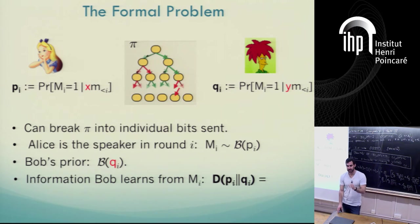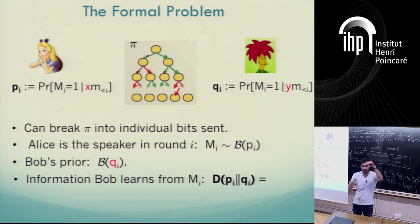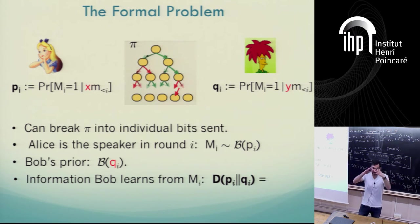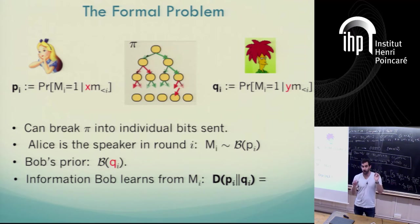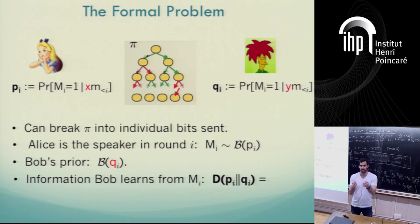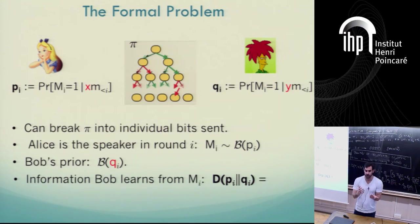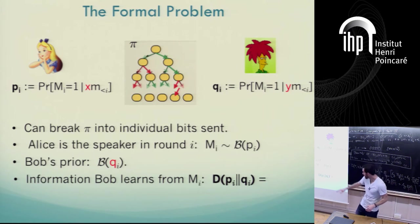This is a point-wise quantity defined per history, per path. This was precisely the task of the odometer primitive — we know how much information is revealed on average (that's I_bit), but we want a per-path estimate. In the previous example, Alice was sending very little information on average, but Bob never knew which case he was in — whether he was actually learning something or not. The objective of this primitive is to have a point-wise estimate of the information learned.